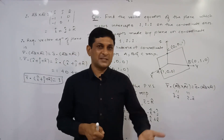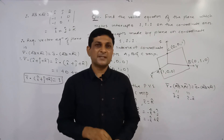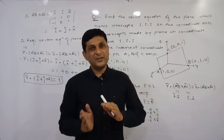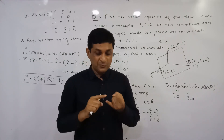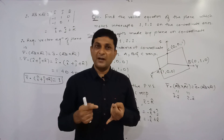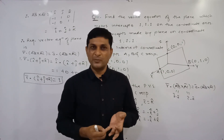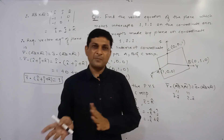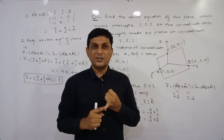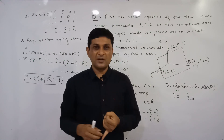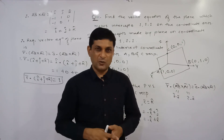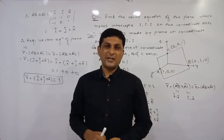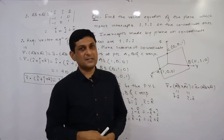With this, we have completed exercise 6.3. The remaining part is the last article of this chapter, where we will find the angle between two planes in vector form and Cartesian form, discuss the angle between a line and a plane, conditions for lines to be perpendicular or parallel to the plane, and check whether two lines are coplanar. All these parts will be discussed in the next video, after which we will start the last exercise.